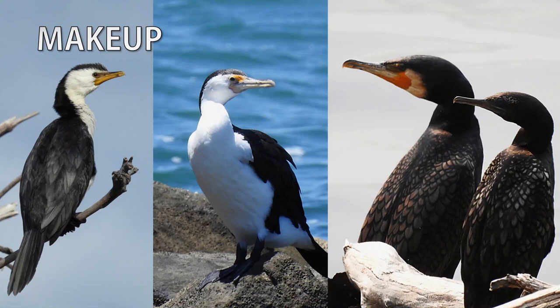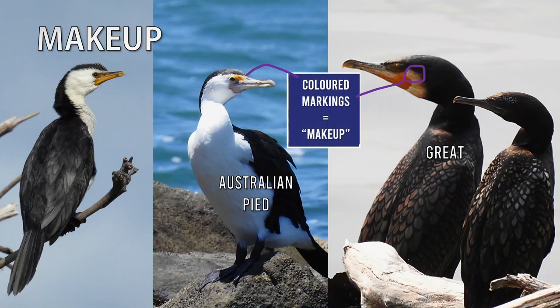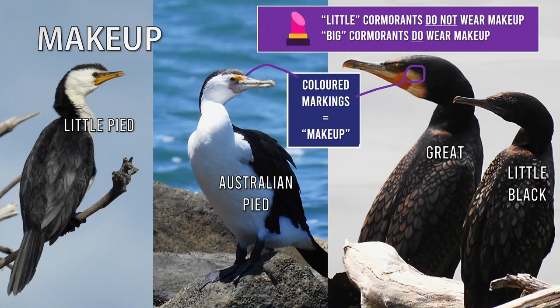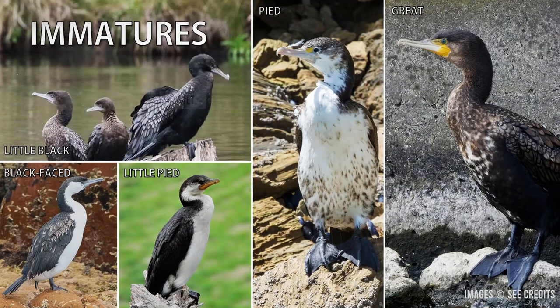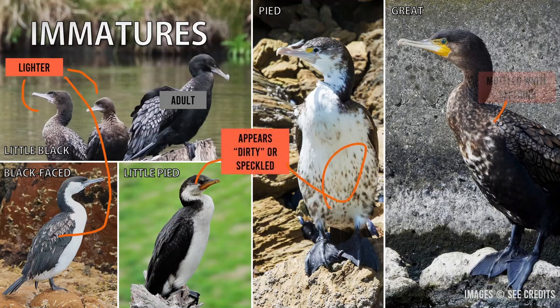Face markings are a key component of cormorant identification. Recall how the Australian pied and great cormorant have colored markings — makeup — on their faces. An easy way to remember which cormorants have face markings is: the larger cormorants, Australian pied and great, are 'adults' and can wear makeup, whereas little pied and little black are 'children' and are not allowed to wear makeup. This separates four of the most common cormorants. Note that immature cormorants resemble adults but black sections are usually brown, white areas may appear dirty, and facial marks may be present but not as obvious.